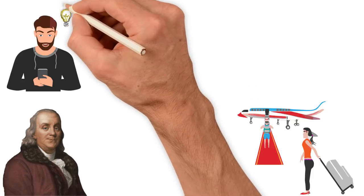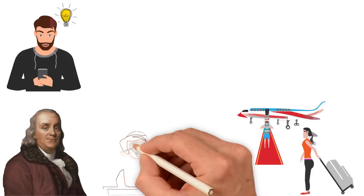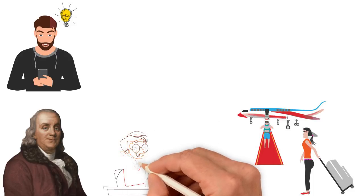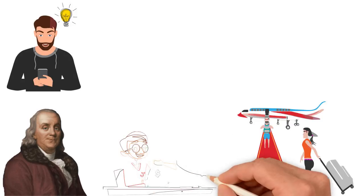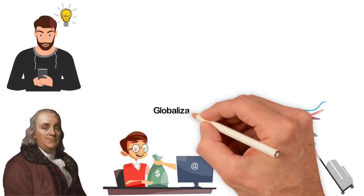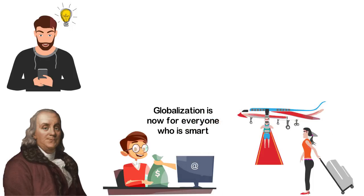Just 30 years ago, if you wanted to create a product as an ordinary person, the market you can sell to is your town, city, if you're rich, your state. Today, however, ordinary guys from the poorest countries are creating products and services and they're selling them to the entire world. Now, globalization is no longer for the rich. It's now for everyone who is smart.